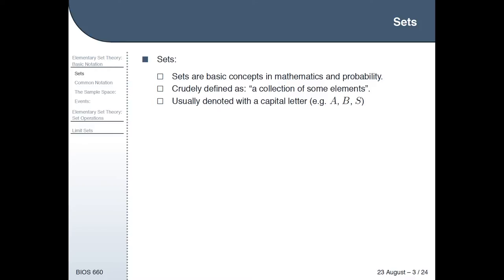Sets are a very basic concept in mathematics and probability. At the crudest level, they're a collection of some elements. They can be a set of numbers, a set of things, or you could have a set of the people in this class. By convention you usually denote them with a capital letter A, B, S, or whatever the case may be.